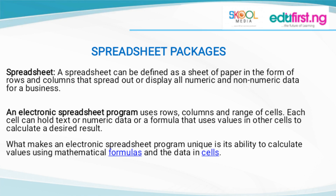We now have what we call electronic spreadsheet. An electronic spreadsheet program uses rows, columns, and a range of cells. Each cell can hold text, numeric data, or a formula that uses values in other cells to calculate the desired result. What makes an electronic spreadsheet program unique is its ability to calculate values using mathematical formulas and the data in the cells.